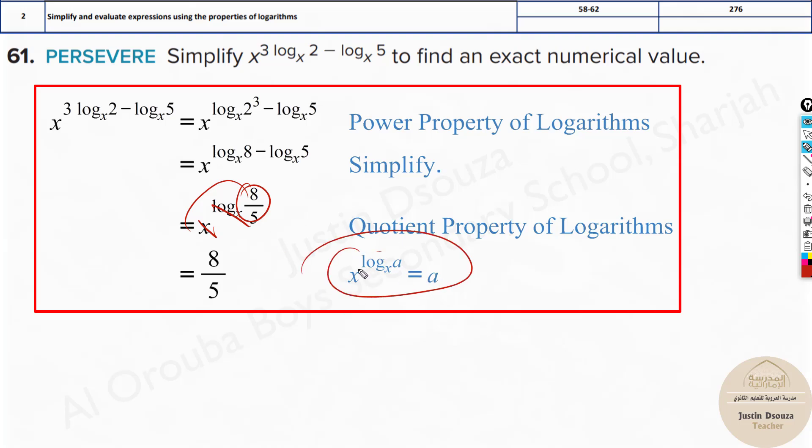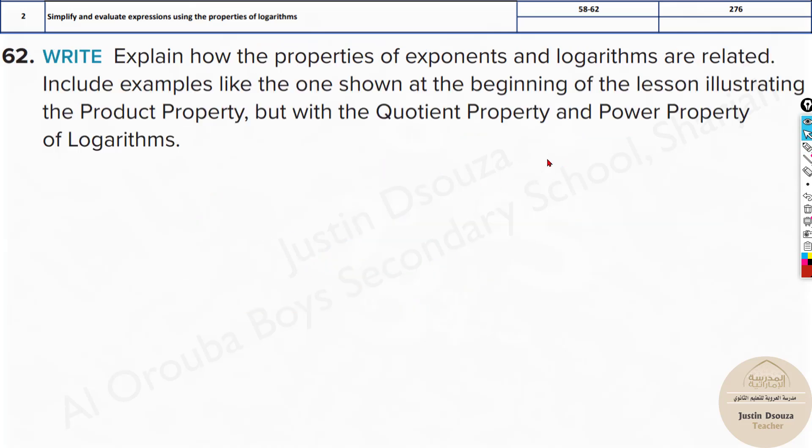Over here they have given the identity. Whenever you have x to the power log base x, this base and this base should match. If these bases match, then whatever is the term over here just comes down. That's the answer.